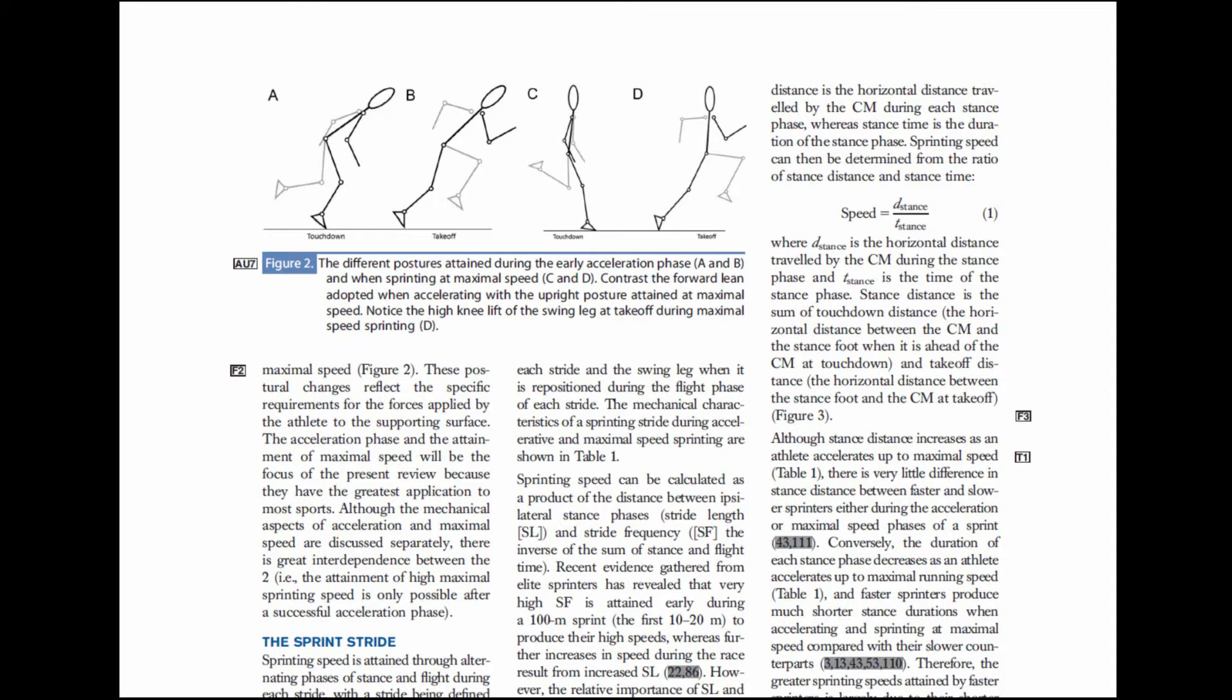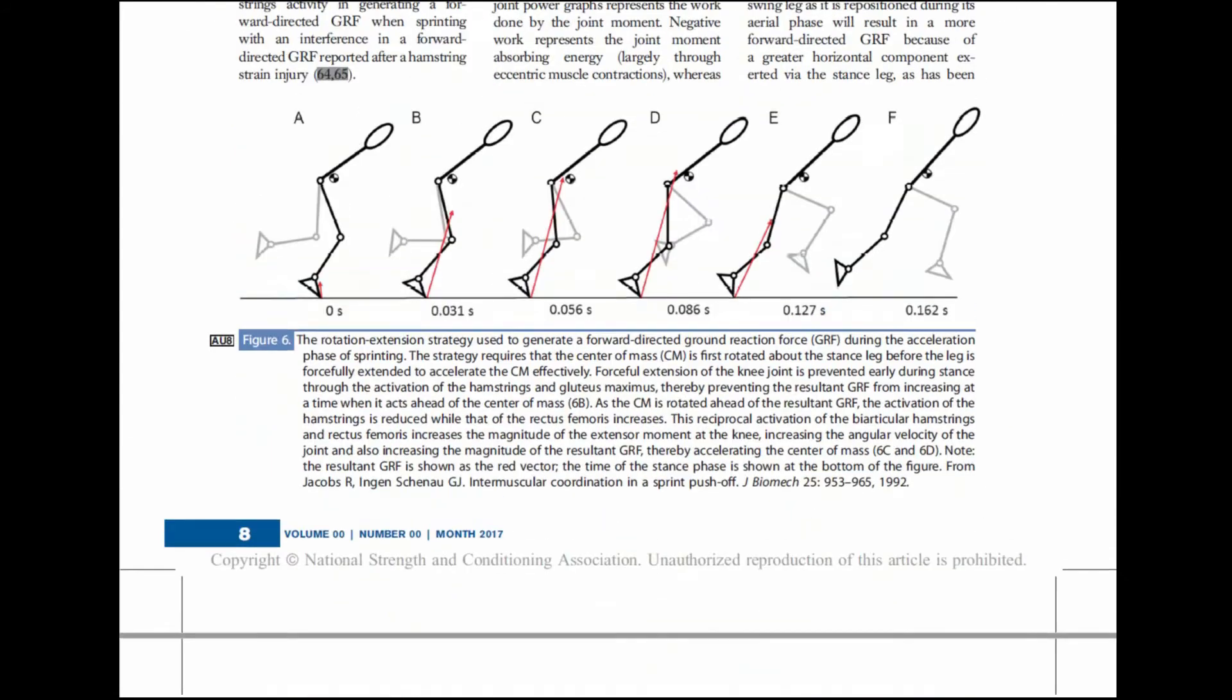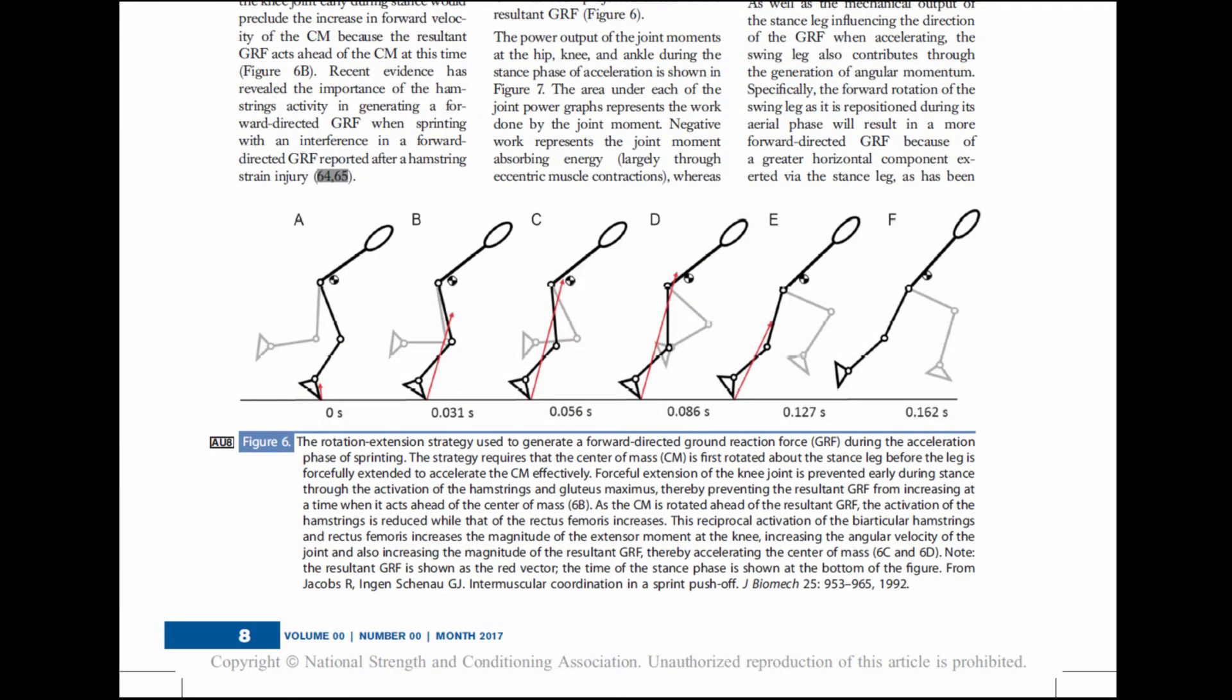If we look at the biomechanical solutions utilized for acceleration, the requirement for the forward-directed force is produced by the utilization of this rotation extension strategy whereby the athlete first rotates the center of mass so it's ahead of the ground reaction force. They've rotated the center of mass so it's ahead of the ground reaction force, and then they get this forceful extension of the knee joint.